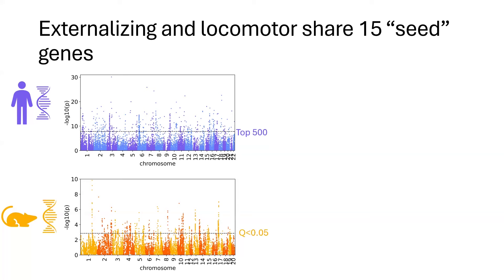I did that for both humans and rats to keep it as close as possible. For rats I used a false discovery rate of 0.05 as a cutoff, and for humans I used the top 500 genes. The reason I did that is because of the small world principle in network biology.